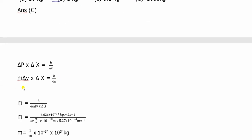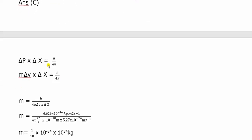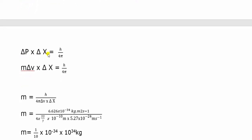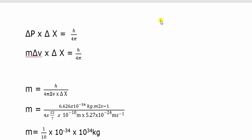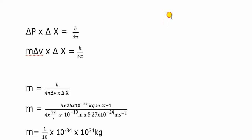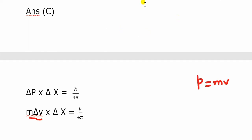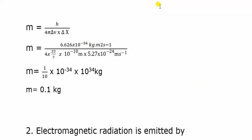We use the uncertainty equation: delta p into delta x is equal to h by 4 pi. The momentum is replaced as m times delta v, so mass of the particle equals h by 4 pi times delta v times delta x in the denominator.